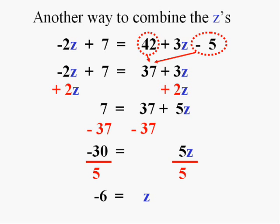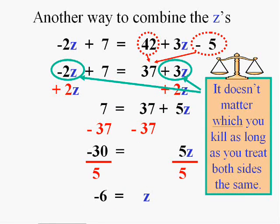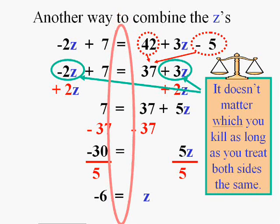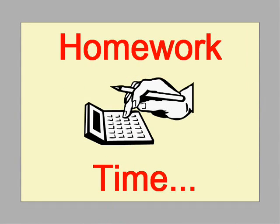So what I'm saying here, you're going to get the same answer anyway. So since it doesn't matter, and as long as you treat both sides the same, always pick on the little guy. That's going to help you later on. And always line up your equal signs. See what I mean by starting to get messy? Line up your equal signs. Get busy with that homework.